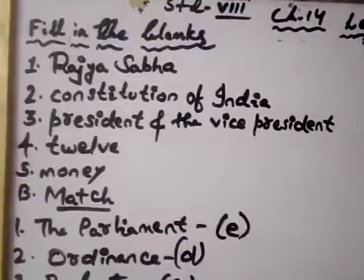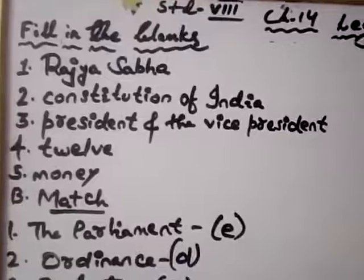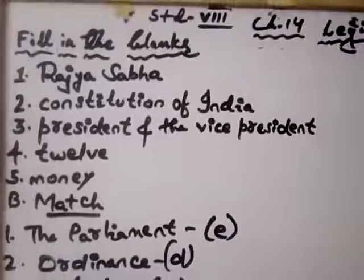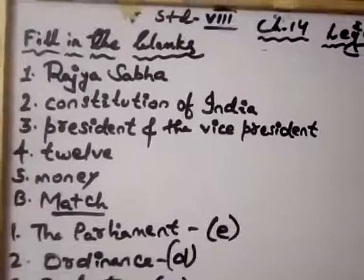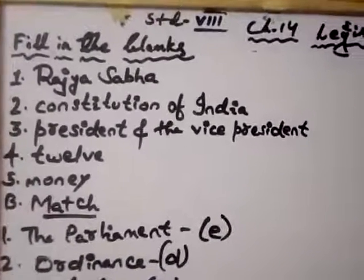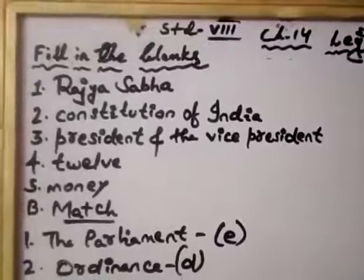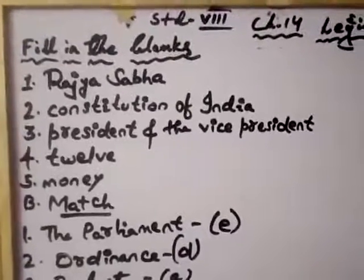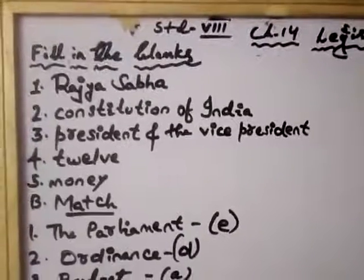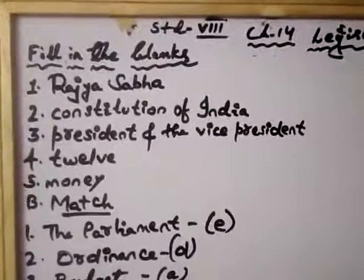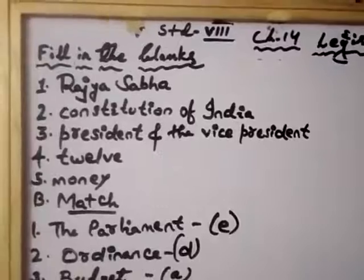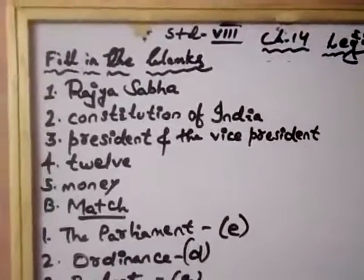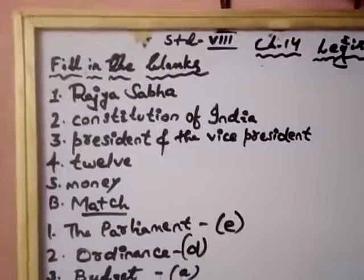The Rajya Sabha is the council of the states of the parliament. Second, the parliament can amend the constitution of India. Third, the parliament elects the president and the vice president of India. Number four, the Rajya Sabha has 12 nominated members. Number five, the Rajya Sabha cannot introduce the money bill.